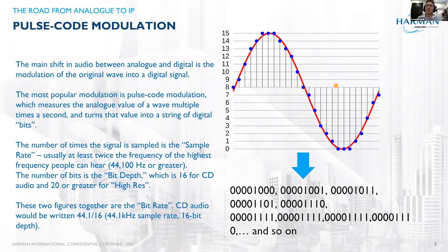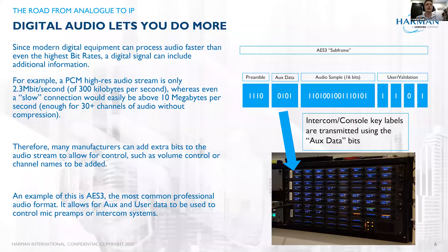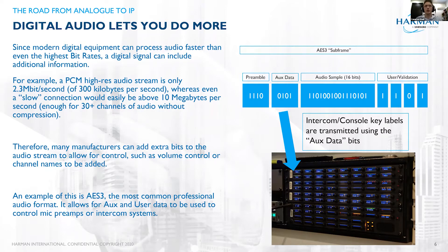The end result is just a bunch of ones and zeros. When we look at the speed at which we can process audio, even at high-res PCM we're only looking at about 2.3 megabits per second — about 300 kilobytes per second. All of us know that 300 kilobytes is much slower than any of our connections, whether Wi-Fi, Ethernet, or even 3G. So a slow connection can easily handle multiple channels of audio, with time gaps between each sample where the device can handle other things.